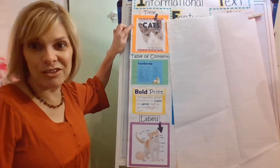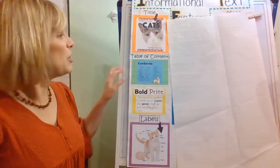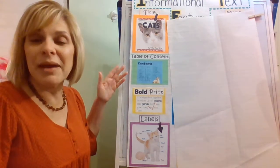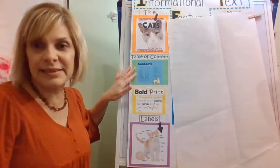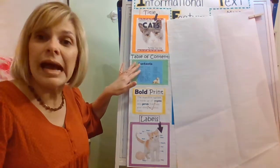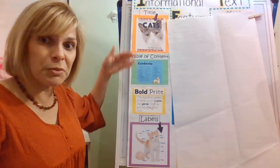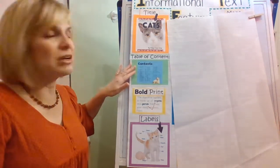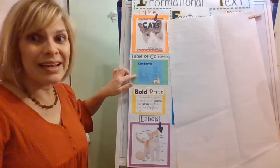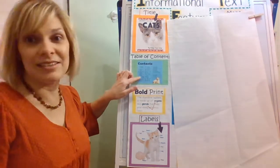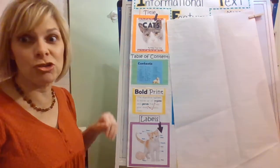The first one is the title. The title of the book tells you what the book is about. When you open the book, some of them have a table of contents. A table of contents has the titles of sections inside the book. So if your book is about cats, the table of contents may say what cats eat, what cats are, what cats like to do, and then you can find the page and go to that section.